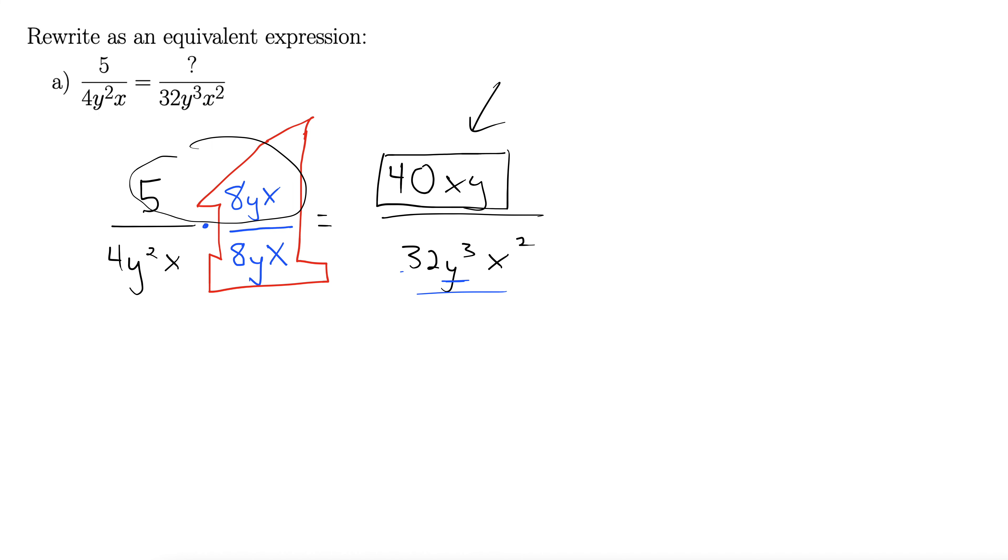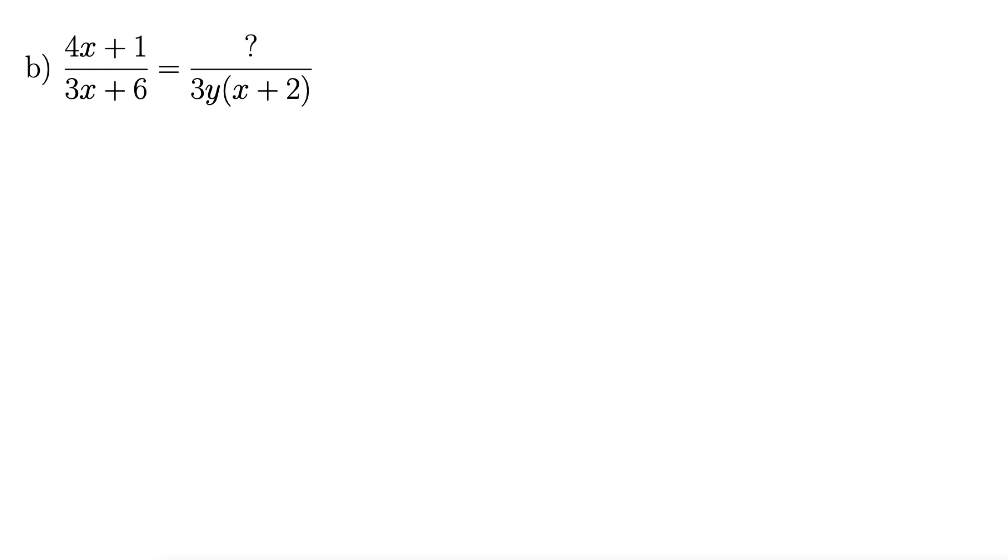Let's try another one of these. Here we have 4x plus 1 over 3x plus 6 and we want to write that as something, we don't know what, divided by 3y times x plus 2.